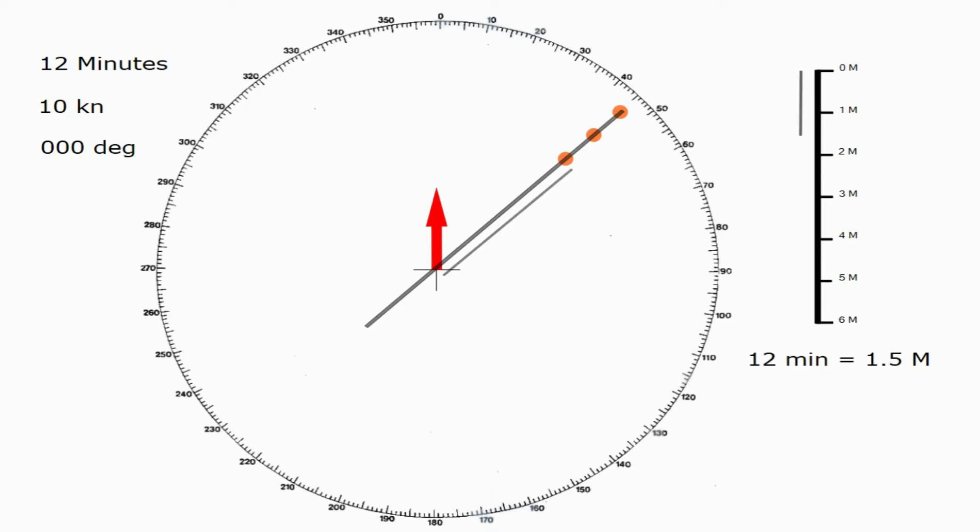Then, we need to find the distance that the target vessel has got to go from its final position until it reaches us. Again, we're going to transpose this onto the side scale and measure up to find it's about 3.3 miles. To work out how long it's going to take to travel that, we need to do a ratio between these. The ratio of 3.3 to 1.5 will be the same as the time to go to 12.